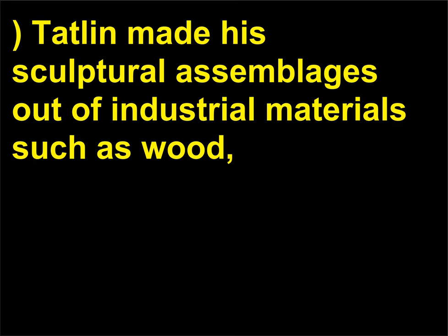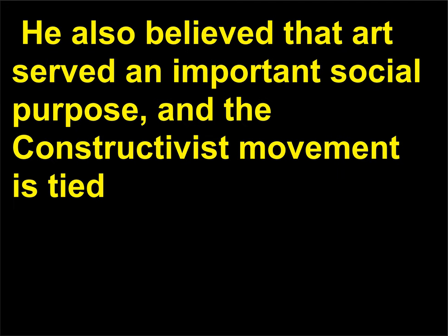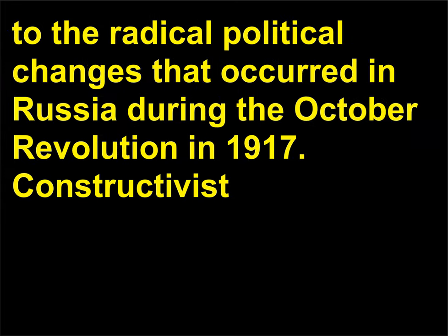Tatlin made his sculptural assemblages out of industrial materials such as wood, plaster, glass, and metal. He also believed that art served an important social purpose, and the Constructivist movement is tied to the radical political changes that occurred in Russia during the October Revolution in 1917.